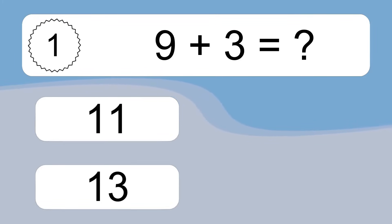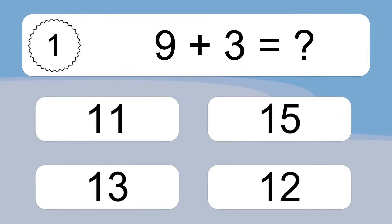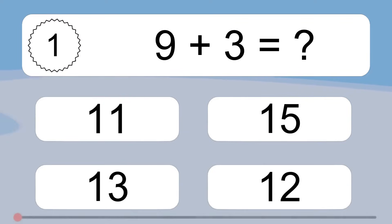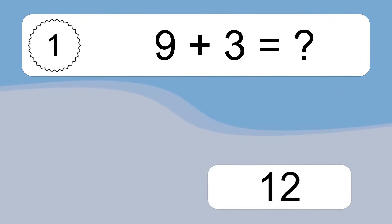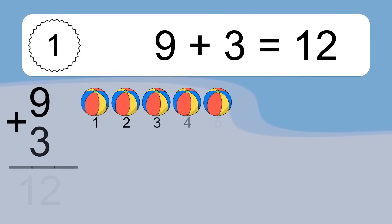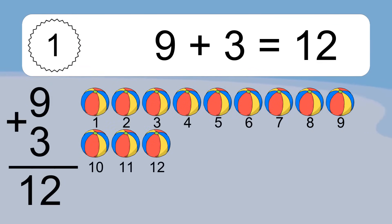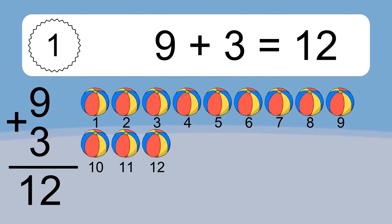9 plus 3 equals what? 9 plus 3 equals 12. Let's count it. 1, 2, 3, 4, 5, 6, 7, 8, 9, 10, 11, 12.